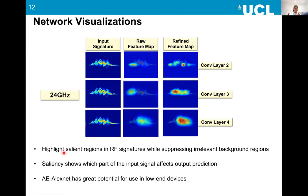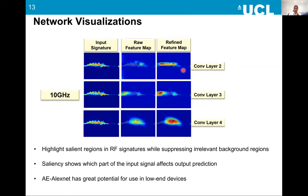We did the same analysis for 24 GHz and 10 GHz radar data, and could see the prediction regions the network uses. The overall conclusion is that the attention mechanism highlights regions in the RF signatures and suppresses irrelevant background regions. These maps are called saliency maps, which dictate which part of the signal affects the output prediction. The attention-enhanced AlexNet has great potential for use in low-end devices because it's a very lightweight network, and the proposed modifications do not add too much computational burden.